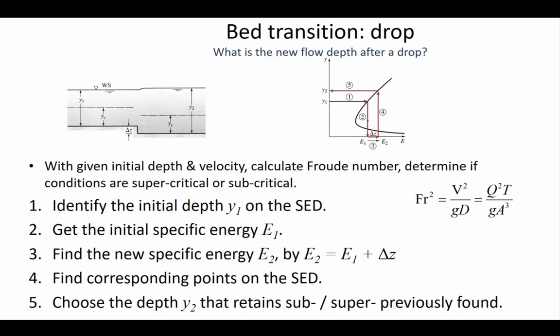If conditions were critical to begin with at location 1, you'd start at the critical depth on the curve and your new depth would come from the secondary crossing. When conditions were subcritical, the depth got bigger with a step down. If you had supercritical conditions, then a step down means the flow depth is going to decrease because you're lower on that curve with an increase in energy.